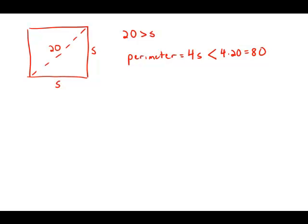Right away, that means that answer choices C, D, and E are out. On the GMAT, if you can eliminate answer choices and then guess from the remaining ones, that is to your advantage.